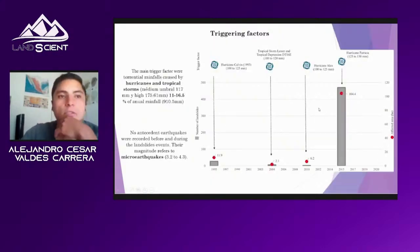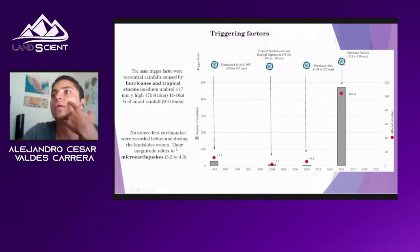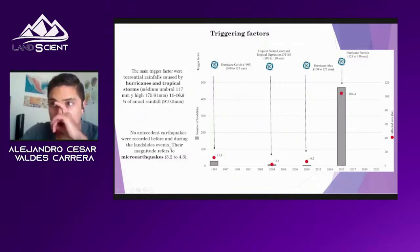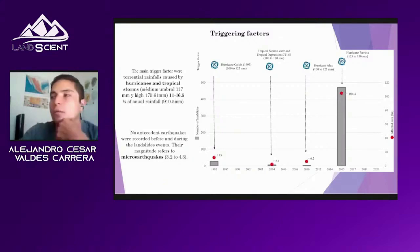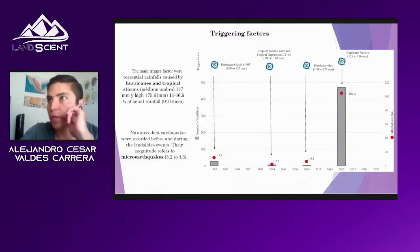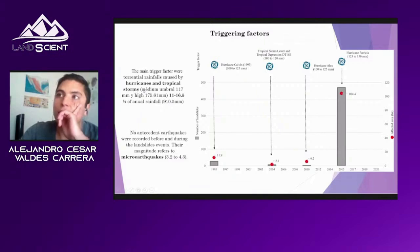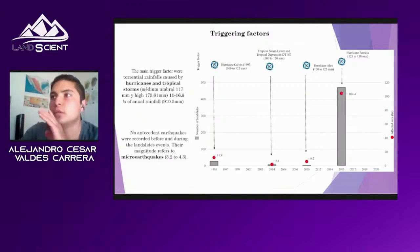We also performed a trigger factor analysis. There are no antecedent earthquakes in this area before or during the processes. The earthquakes recorded in this area are considered micro-earthquakes with magnitude lower than 4.5. The main trigger factor was torrential rainfall caused by hurricanes and tropical storms, which represent 11 to 16.5% of the annual rainfall in this area.